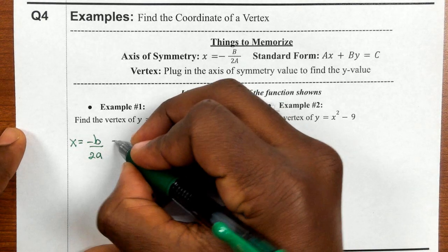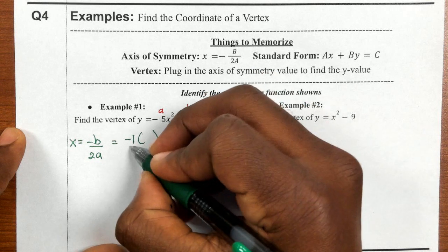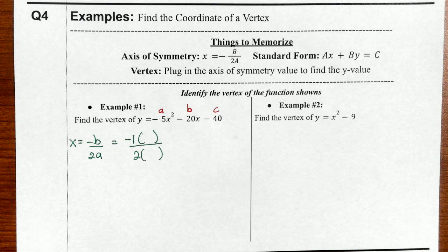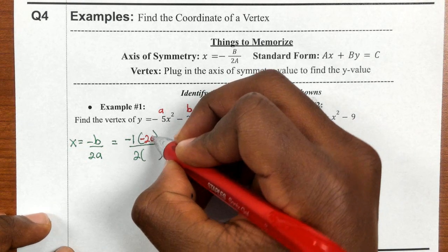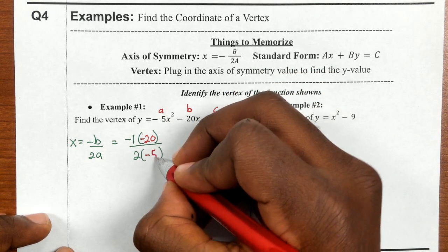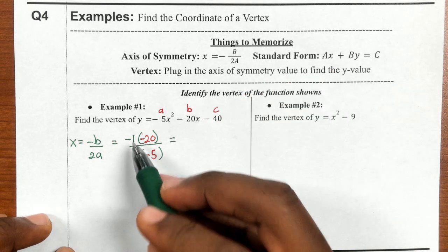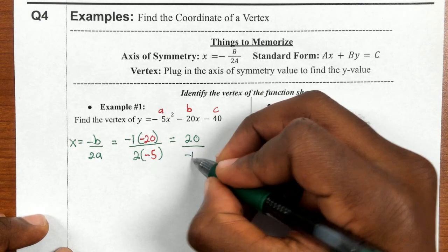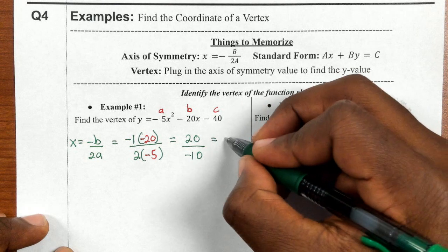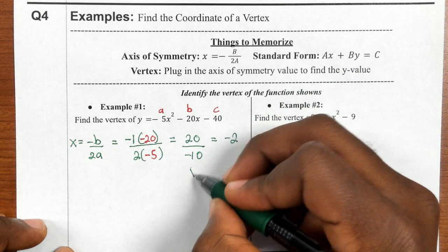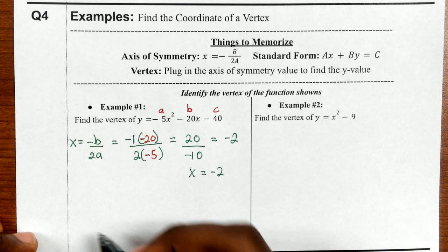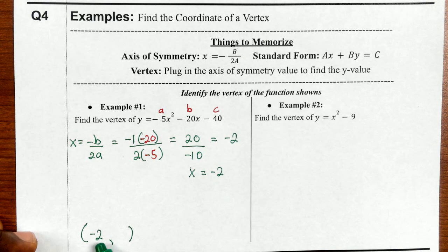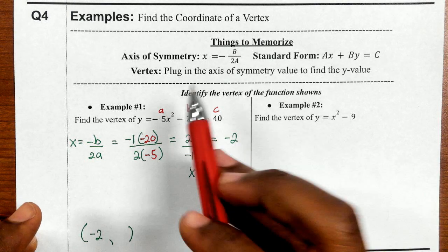I'll set this up as negative parentheses over 2 parentheses. My b is negative 20 and my a is negative 5. Calculating: negative 1 times negative 20 is positive 20; 2 times negative 5 is negative 10; 20 divided by negative 10 is negative 2. So my x value of my vertex is negative 2.